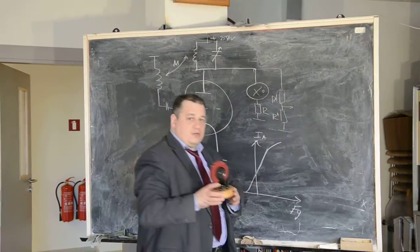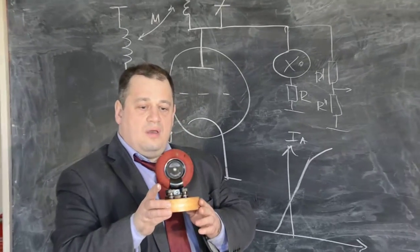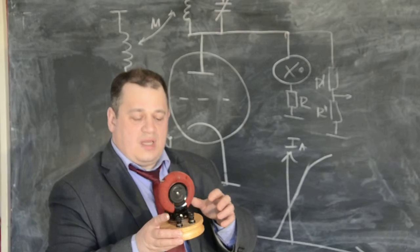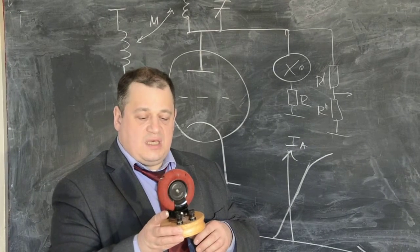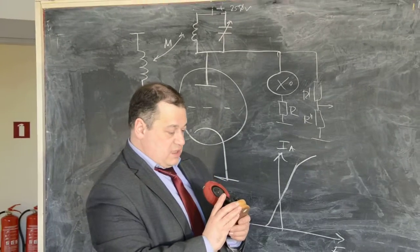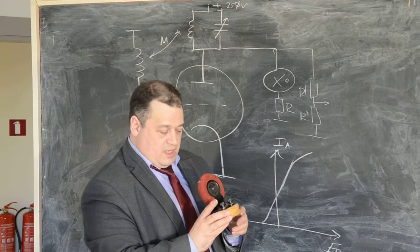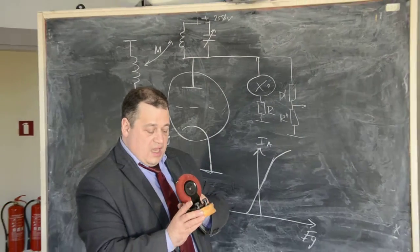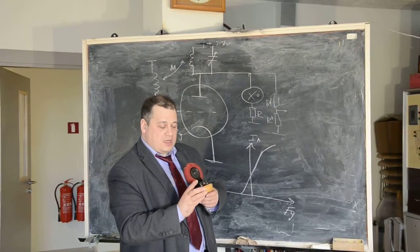This toroidal transformer has two windings. Outer, red one, and inside, inner, the white one. The outer, red one, has inductance of 200 mH. Inner one, 90 µH.